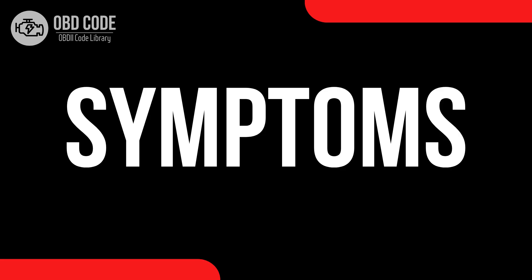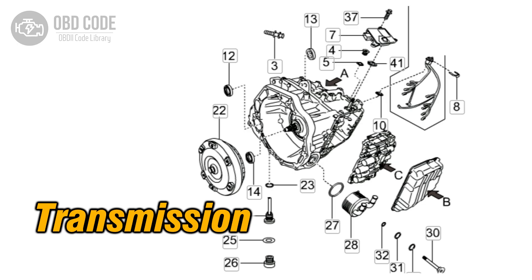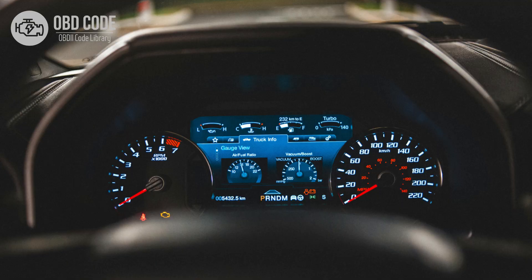Code symptoms P0961: 1. Erratic shifting behavior. 2. Poor transmission performance. 3. Delayed or harsh shifting. 4. The check engine light (CEL) may be illuminated.